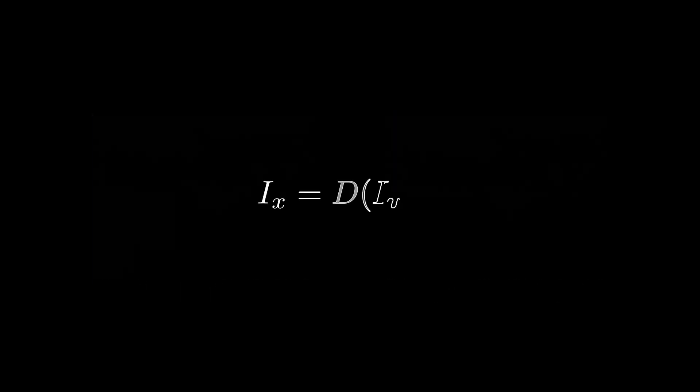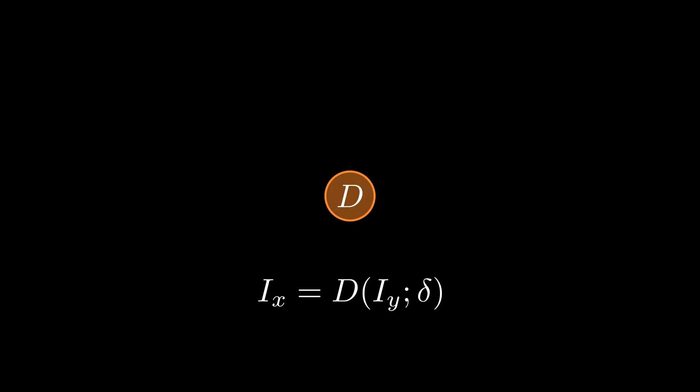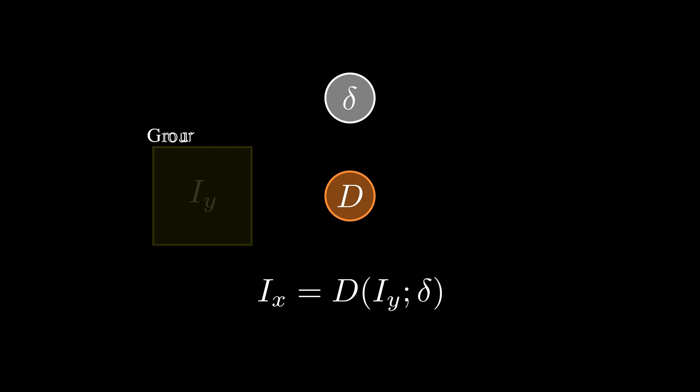We can define the degradation process of an image as follows. Here, Ix represents a low-resolution image, and Iy is its theoretical, or real, high-resolution counterpart. The degradation function d represents some process that led to or caused the low-resolution to occur, with some factor gamma to represent the degree of change caused by d.